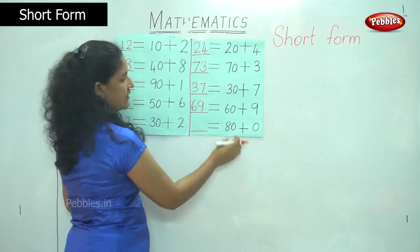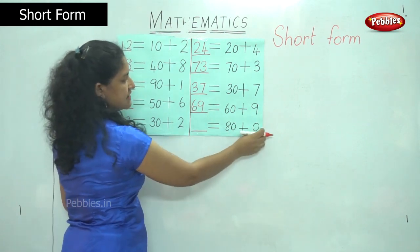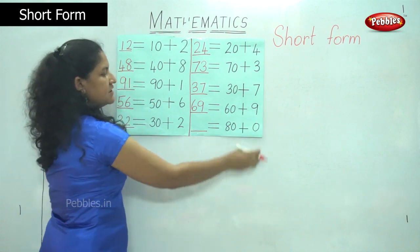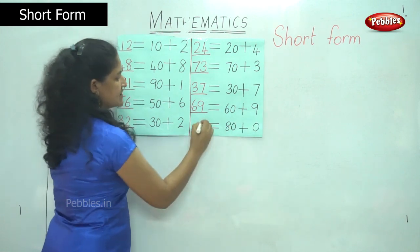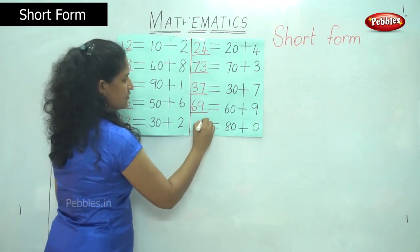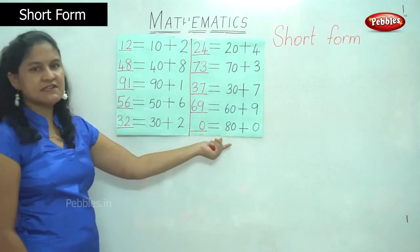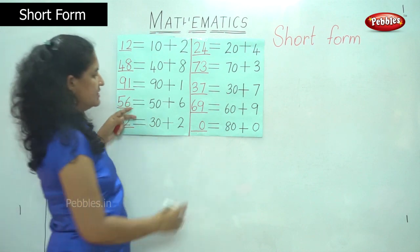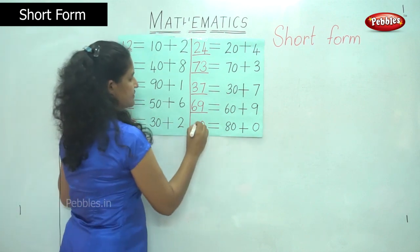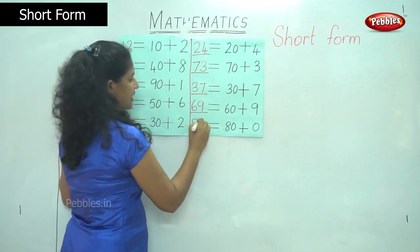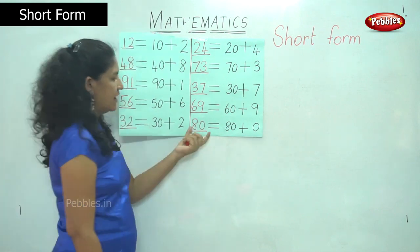The next I have is 80 plus 0. So in the ones place I have 0, and in the tens place I have 8 tens or 80, that gives me the number 8. So my answer is 80.